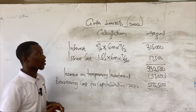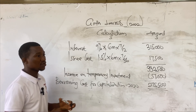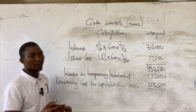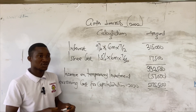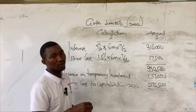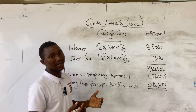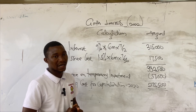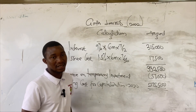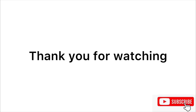This is how we calculate borrowing costs with regards to specific borrowings. In our subsequent video, we will also look at how to calculate borrowing costs when there is a general borrowing, where funds have been borrowed for several purposes with different sources and different interest rates, where we have to use the capitalization rate — that is the weighted average method — to determine the capitalization rate for borrowing costs eligible for capitalization. Thank you for watching this video.